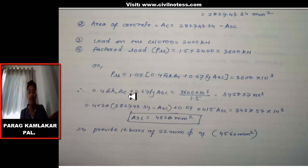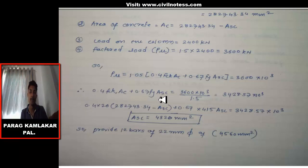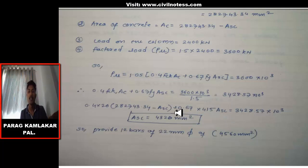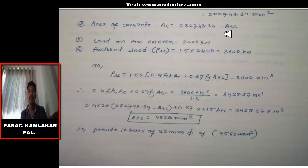We have two variables Ac and Asc in the equation, so we convert to one variable. Using Ac = Ag − Asc, we replace Ac in the equation. With only Asc as the unknown, solving gives Asc = 4320 mm². This is the required area of steel. Then Ac = Ag − Asc gives the area of concrete.